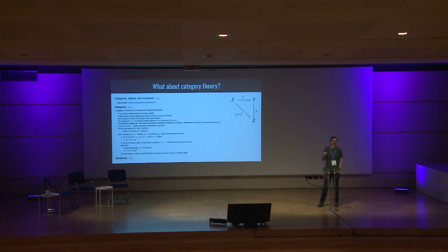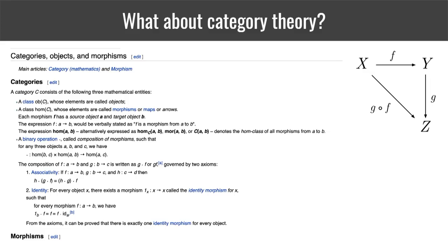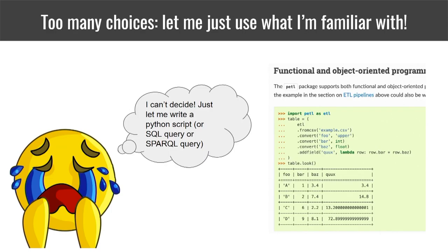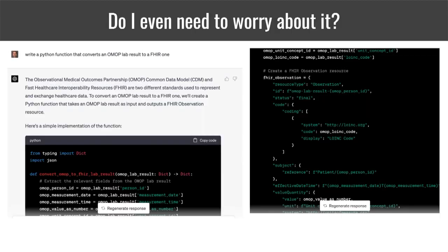At some point someone pops up and says, well, what about category theory — can't this all be done using morphisms? And you think: what the hell is a morphism? At that point you just say: this is too complicated, I'll just do my data transformations directly in Python or SQL, which is perfectly acceptable, but has the disadvantage that your mappings become less declarative and less FAIR. Maybe in the future we just ask GPT to map our OMOP data objects to FHIR — and it seems to do a reasonable job so far.